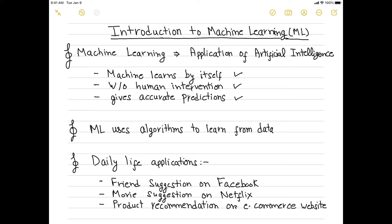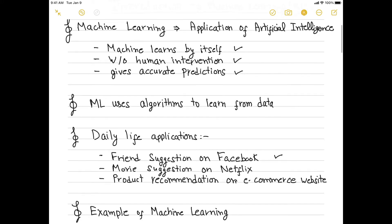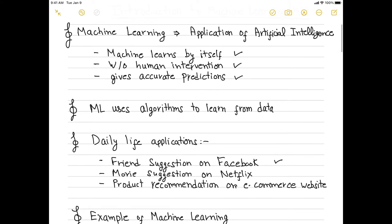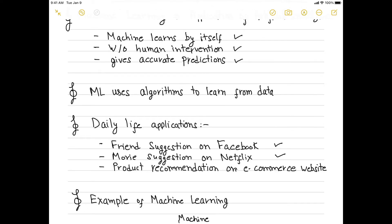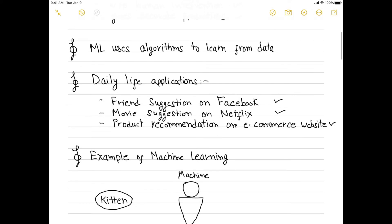Machine learning has become an integral part of every facet of life. Some of its daily life applications are friend suggestions on Facebook, which you must have seen many times on your profile, movie suggestions on Netflix, and product recommendations on e-commerce websites like Amazon.